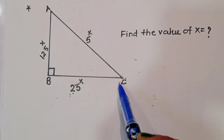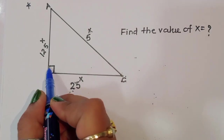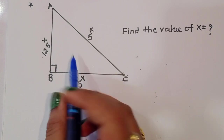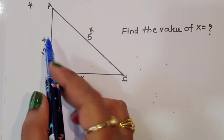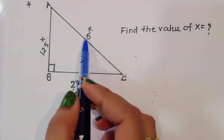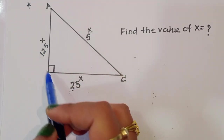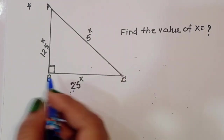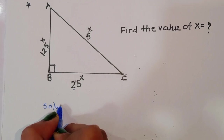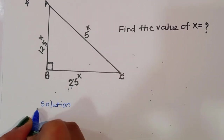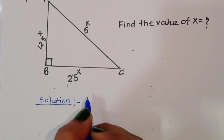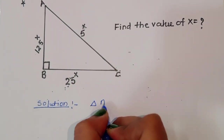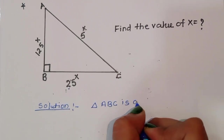This is a right angle triangle ABC, with a 90 degree angle. The base is given as 25^x, the height is 125^x, and the hypotenuse is 5^x. We have to find out the value of x in this right angle triangle.